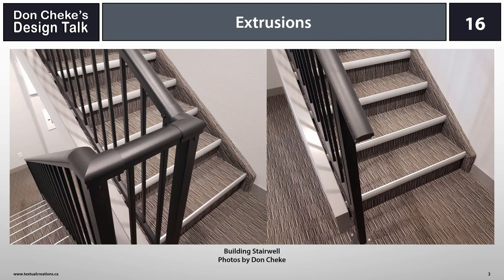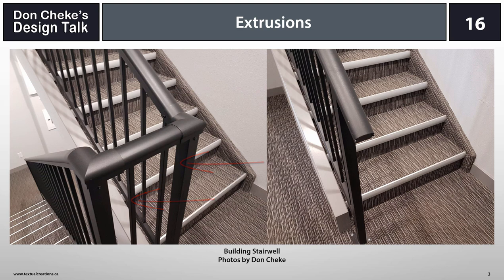As I was preparing this presentation, I had a look around my condo building for things that were made with extrusions. Here in the stairwell, I noted a few. The handrail is for sure — I can feel and hear that it is aluminum as I run my hand along it. The posts and the balusters are the same aluminum material and are likely made from extrusions.